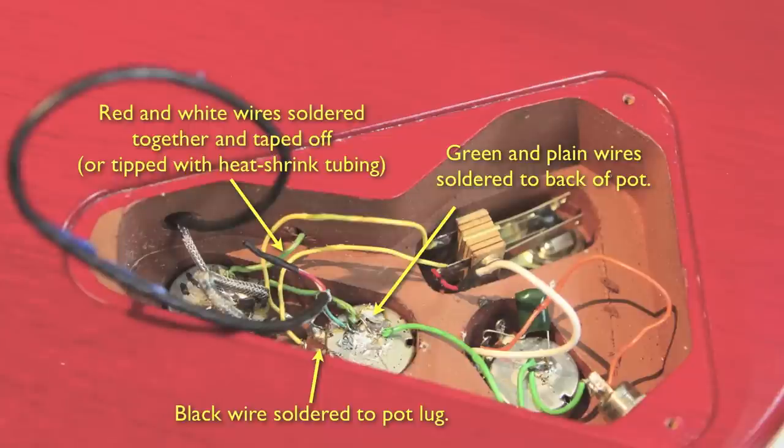And just to be super clear, here's an annotated picture of what we just did. Black wire to the lug, ground wire to the back of the pot, red and white taped off.